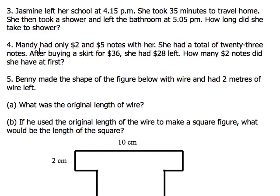Let's read the question first. It says that Mandy had only $2 and $5 notes with her. She had a total of 23 notes. That means if you add up the $2 notes and the $5 notes, you have 23 of them.